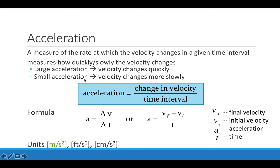A good example of this is two cars waiting at a stoplight together. When the light turns green, one car steps on the gas and goes very quickly from a starting position to a very fast velocity, while the other one steps on the gas but changes its velocity more slowly. So the one that sped away has a large acceleration versus the car that took its time and had a smaller acceleration.